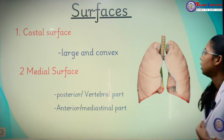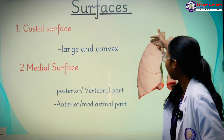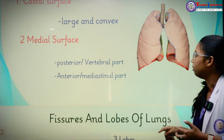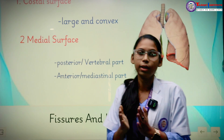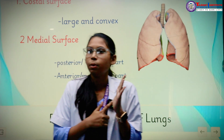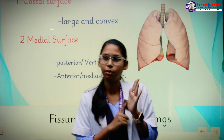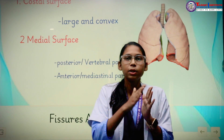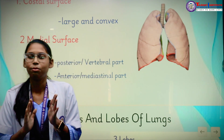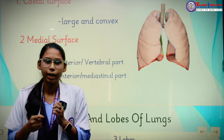The lungs have two surfaces: costal and medial. The costal surface is large in comparison with the medial surface and is convex. The medial surface is on the inside and is divided into two parts: the anterior part, called the mediastinal part, and the posterior part, called the vertebral part. The mediastinal part is named so because it is present near the mediastinum, and the vertebral part is named so because it contains the vertebrae and intercostal muscles.